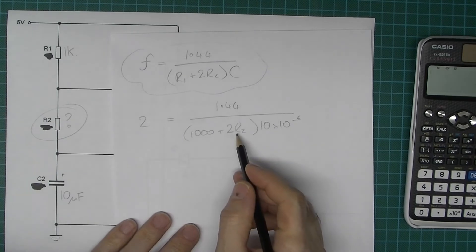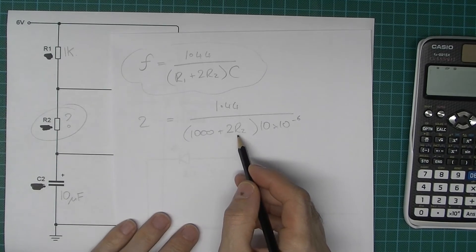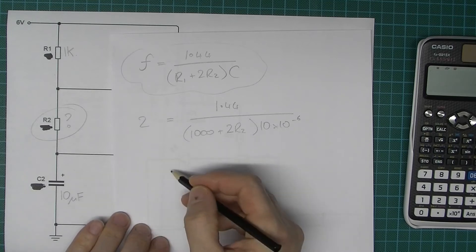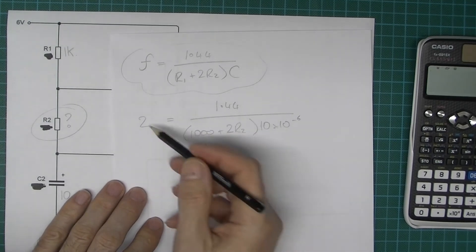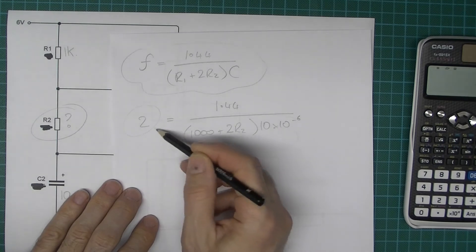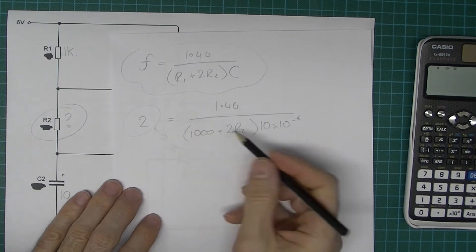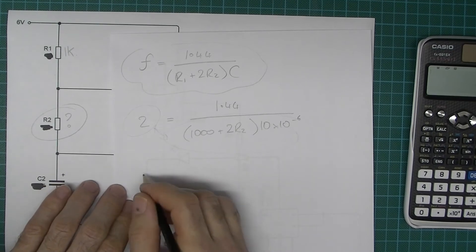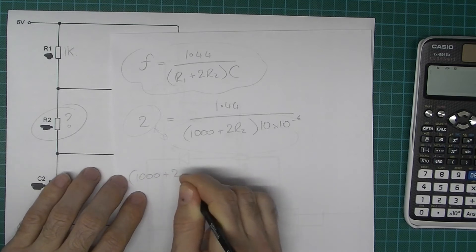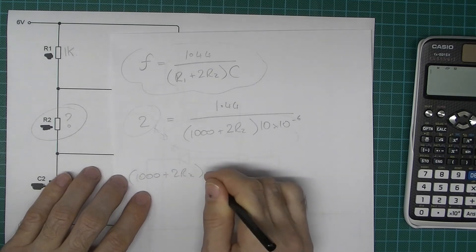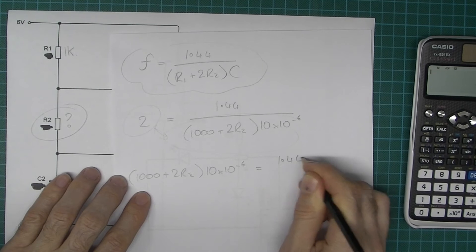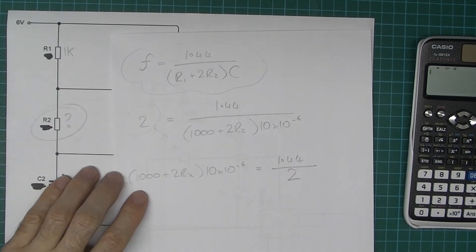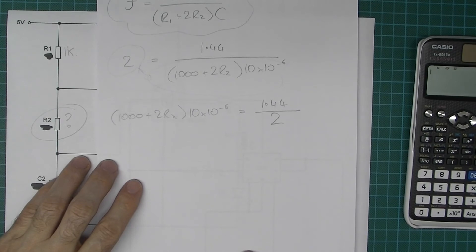So what we now need to do is we need to get R2 on its own so that ultimately we're going to have a formula which says R2 equals and then there will be a calculated value. Okay, so what I'm going to do, I'm going to swap these terms around and you should be familiar that you can do that in maths. So I'm going to write this out again: brackets 1000 plus 2 R2 times 10 times 10 to the minus 6 equals 1.44 over 2. I'll give you a moment just to look at that.